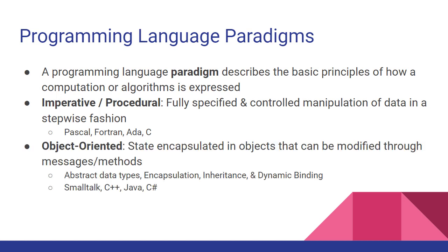The next paradigm is object-oriented, which you should have some experience with from Java. The idea is that you have state encapsulated in objects, and those objects can be modified or manipulated through methods or messages. You'll see things like abstract data types, encapsulation, inheritance, and dynamic binding — all important features of object-oriented programming. It's important to keep in mind that these ideas aren't necessarily tied only to object-oriented languages; it's possible to do inheritance in C. But with an object-oriented language, you get more language support for those things. Examples include Java, C#, Smalltalk, and C++.